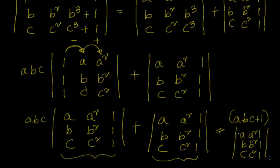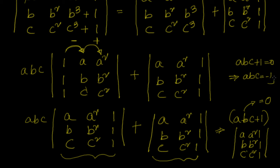We have been told that the determinant of (A, A², 1), (B, B², 1), (C, C², 1) is not equal to 0. That means (ABC + 1) must equal 0, which gives ABC = minus 1.